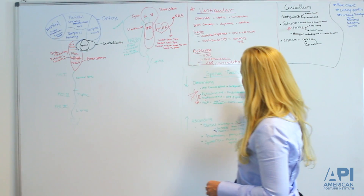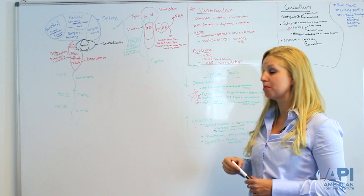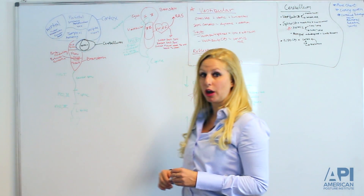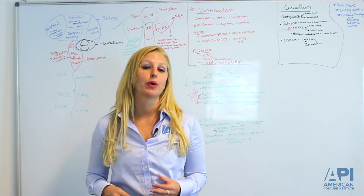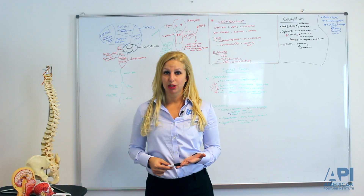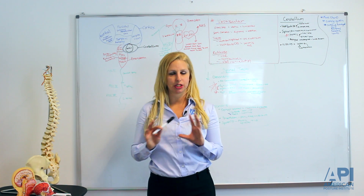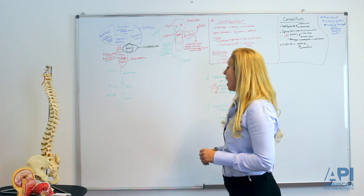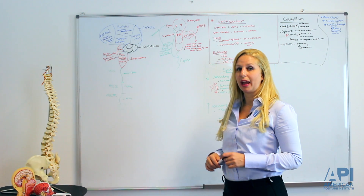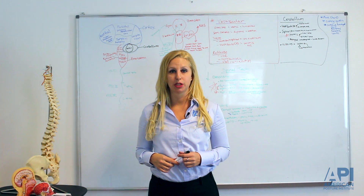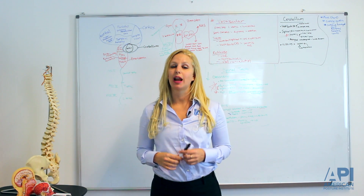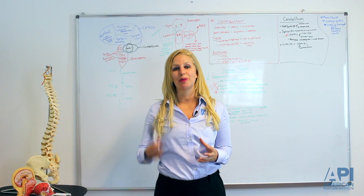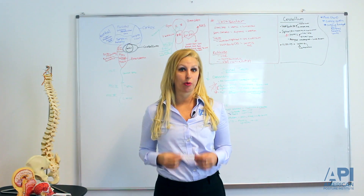The prime spinal tract for voluntary movements descending motor is the corticospinal. Primary tracks for postural stabilization are the reticulospinal and the vestibulospinal. For ascending information, we have the dorsal columns and the anterolateral systems, which send information up to the sensory cortex to be perceived for sensory motor integration to then produce an appropriate motor response.